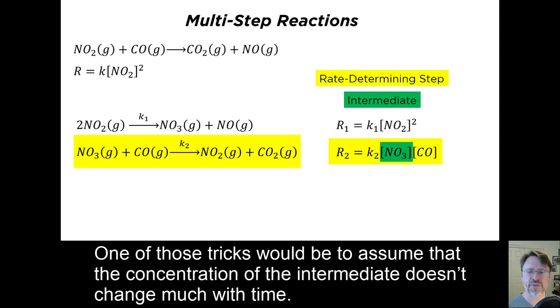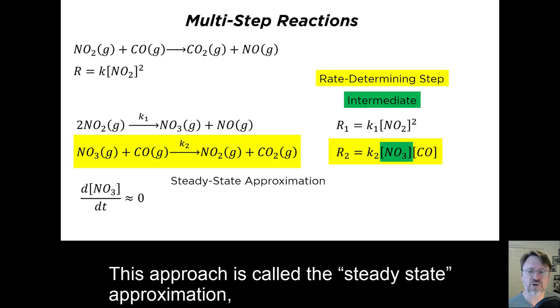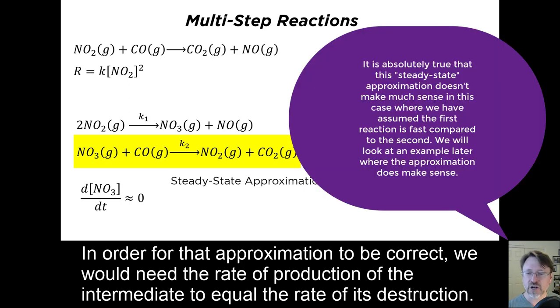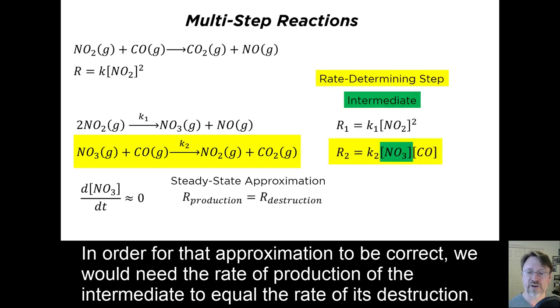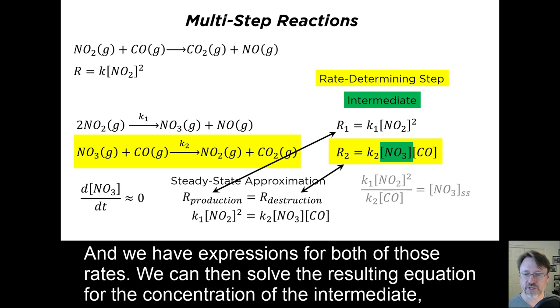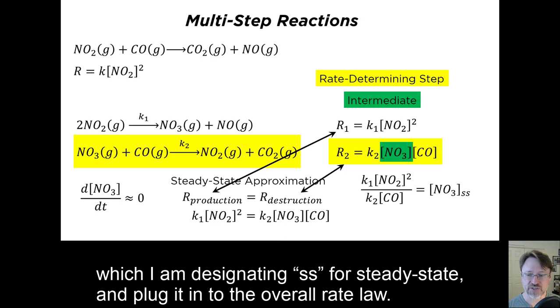One of those tricks would be to assume that the concentration of the intermediate doesn't change much with time. This approach is called the steady-state approximation, because we assume that the intermediates have a steady concentration over time. In order for that approximation to be correct, we would need the rate of production of the intermediate to equal the rate of its destruction. And we have expressions for both of those rates. We can then solve the resulting equation for the concentration of the intermediate, which I'm designating SS for steady state, and plug it into the overall rate law.